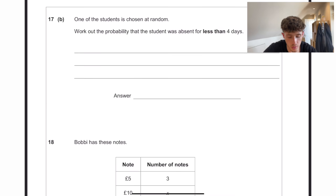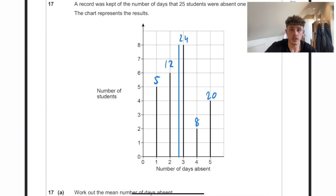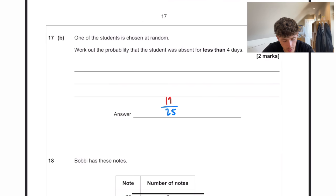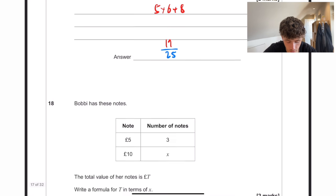One of the students is chosen at random. Work out the probability that the student was absent for less than four days. So there was 25 students in total, so our probability is going to be out of 25. And less than four days would be one, two, or three days in total. As you can see, five students were absent for one day, six here, and eight here. So five add six, add eight, is equal to 19. So 19, again, just put the workings here, just to be safe, but 19 out of 25 would be our answer there.